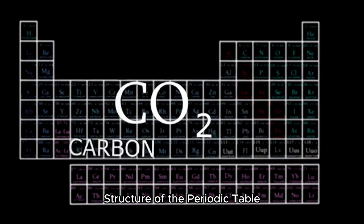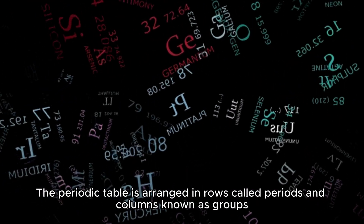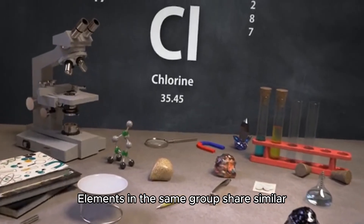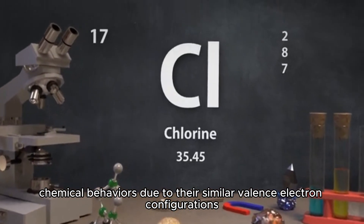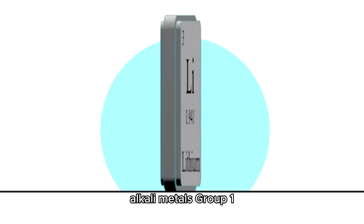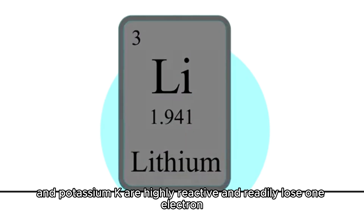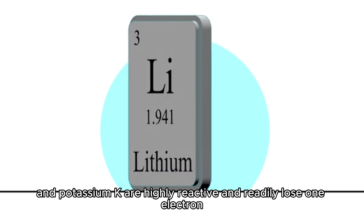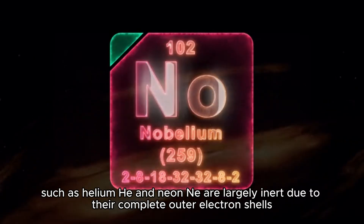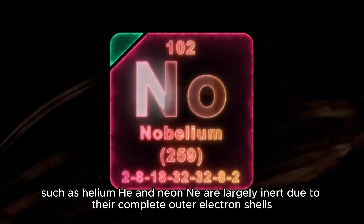The periodic table is arranged in rows called periods and columns known as groups. Elements in the same group share similar chemical behaviors due to their similar valence electron configurations. For instance, alkali metals (Group 1), like lithium (Li), sodium (Na), and potassium (K), are highly reactive and readily lose one electron, while noble gases (Group 18), such as helium (He) and neon (Ne), are largely inert due to their complete outer electron shells.